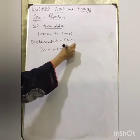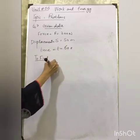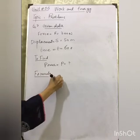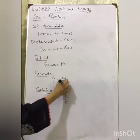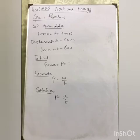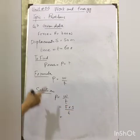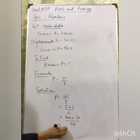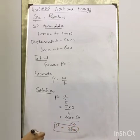The action was completed in 60 seconds. To find power. Formula: work done divided by time. Solution: work done equals force multiplied by displacement divided by time. So we have 300 multiplied by 50 divided by 60. The answer is 250 watts. The power of the man is 250 watts.